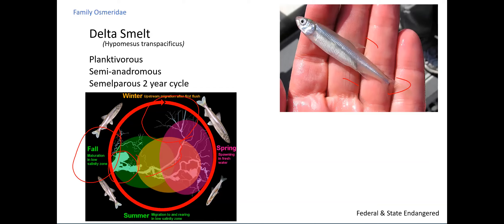Some delta smelt stay local and reproduce in brackish water; others migrate all the way to fresh water in the north delta — two slightly overlapping life history strategies. Historically they would also have moved into the San Joaquin, which was probably some of the richest habitat in the bay-delta but is now essentially a dead zone. This is an example of a portfolio effect in a one-to-two-year-lived species. They reproduce in late winter or early spring, attaching eggs to small gravel substrate.